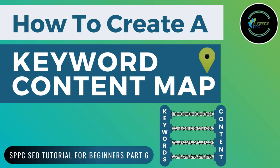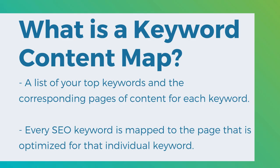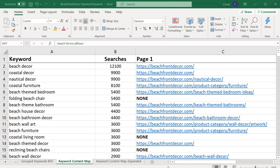A keyword content map, if you're not sure what it is, is a list of your top keywords and the corresponding pages of content for each individual keyword. Basically what you want to do is take every SEO keyword that you're trying to rank for, for your business, and map them to the page that is optimized for that keyword. A keyword content map looks something like this.